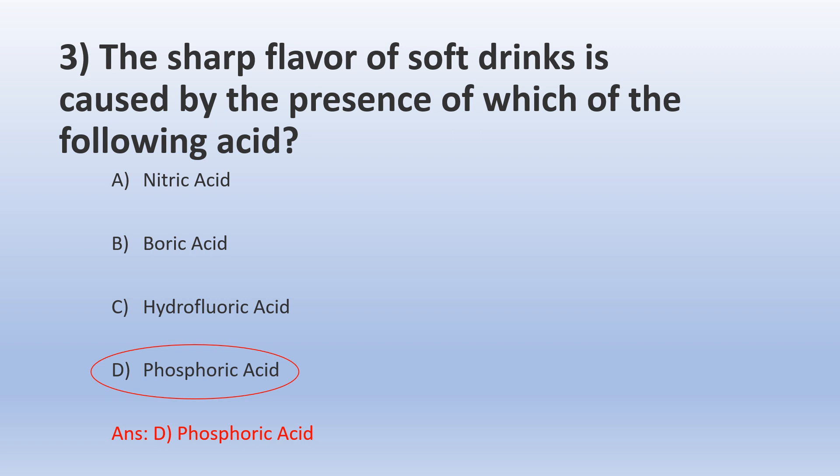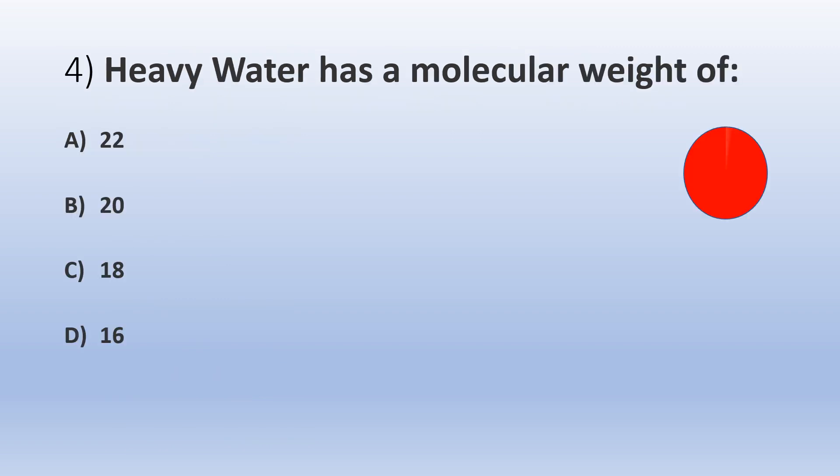We'll move on to the next question. Question number four: Heavy water has molecular weight of: A) 22, B) 20, C) 18, and D) 16.